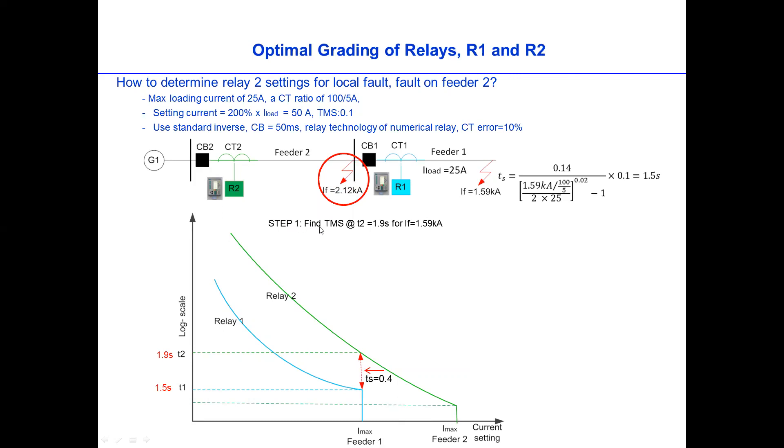The first step is to find the TMS value, T2 of 1.9 seconds, or IF or fault current at the remote end. We need to find out what is the TMS value. To do that one, we need to do 1.9 seconds, because we know that this relay is providing backup after 1.9 seconds. So let's use standard equation here, remote fault, and everything is the same, times the TMS. If we calculate this all value, which is 1.9 as it is, and if we calculate this as it is, it is 15 times TMS.